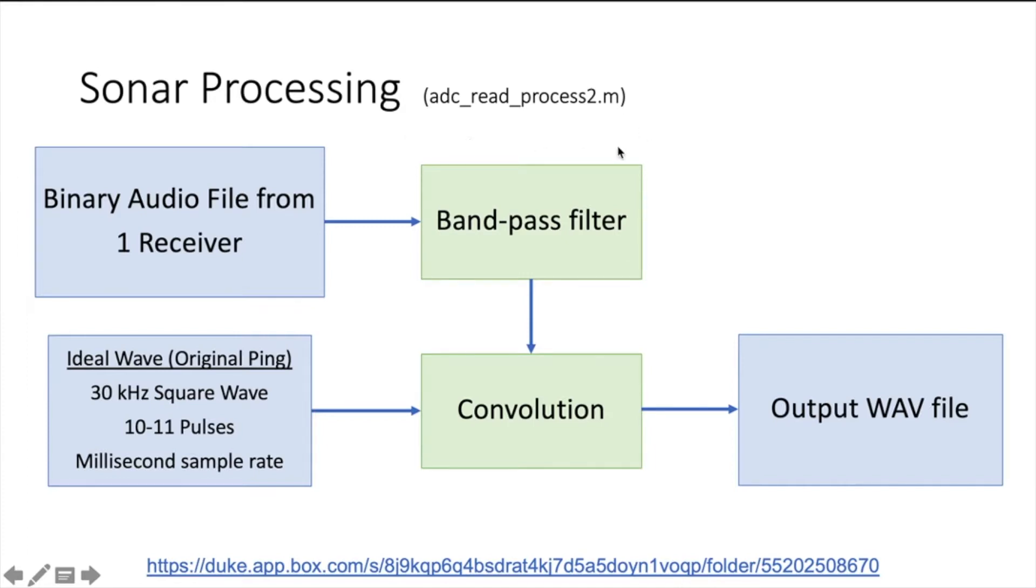So once it's filtered through, it is then convolved with the original ping that the hardware is sending out that the receivers actually read in. The reason for this convolution is to get rid of all the extra static and noise outside of the actual pings that we care about.